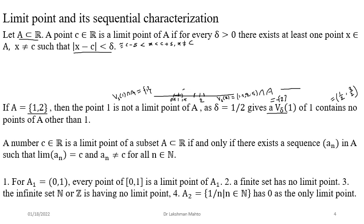Sequentially, we can characterize a limit point like this: a real number c is called a limit point or cluster point of a set A if and only if there exists a sequence of points in A - every a_n must be from A - such that the sequence converges to c, and each a_n is different from c. So if you come up with a sequence in a set that converges to some point, we can claim that point is a limit point of the given set.